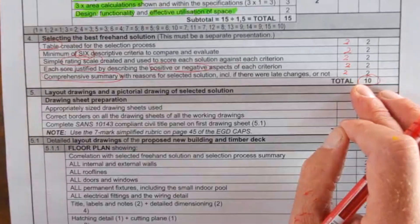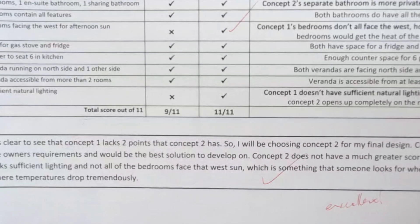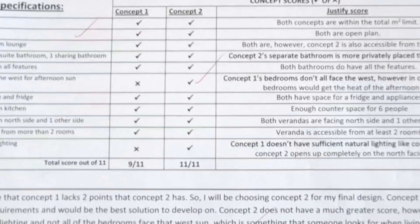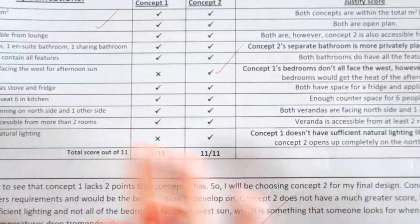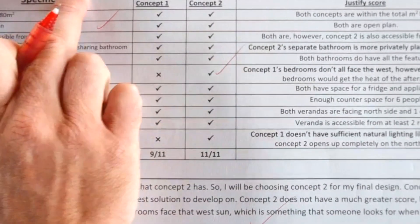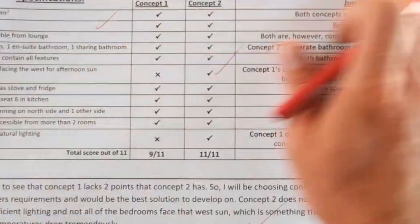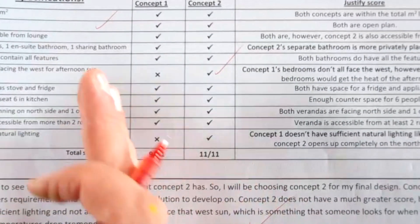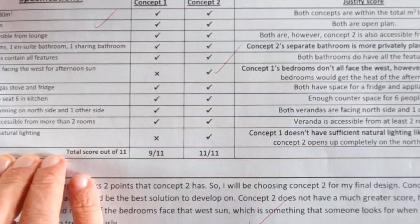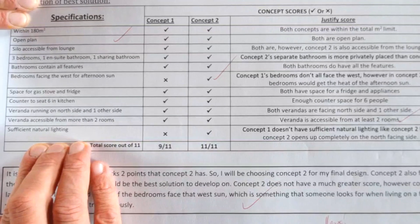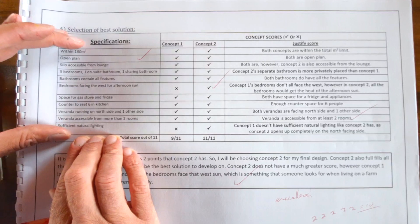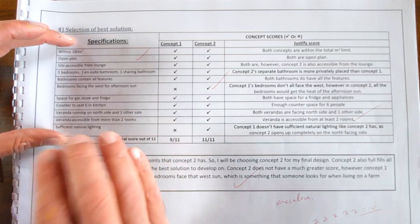Let me show you a practical example. This was done by one of my learners last year doing their PAT. It's number four — selecting the best solution. Nicely done with a border, page number, etc. They've got specifications listed, and they've listed more than six criteria. You can come up with your own six criteria in line with your specifications — whatever they may be. Look at your specifications and pick six very important ones.